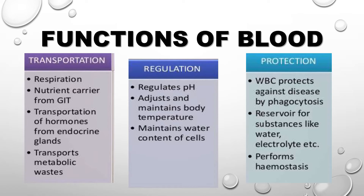Functions of blood: Blood has various functions. It helps in transportation — as a nutrient carrier — and various nervous reactions. It helps in regulation, maintaining pH and body temperature. White blood cells defend against disease by phagocytosis and neutralizing viruses. Water and electrolytes are transported. Hemostasis means preventing bleeding or controlling injury.